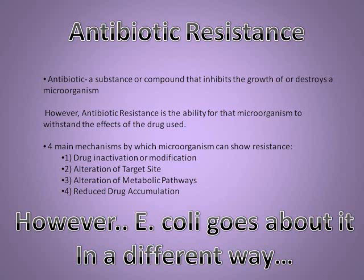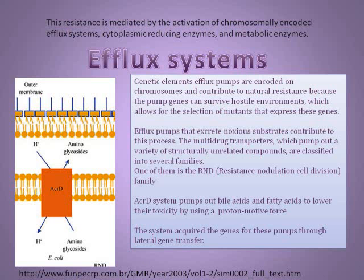The only concern about E. coli is their ability to resist antibiotics. Antibiotics are substances or compounds that inhibit the growth of or destroy a microorganism. E. coli has found a way to intrinsically build resistance towards many regular drugs. Four typical main mechanisms by which microorganisms show resistance are drug inactivation or modification, alteration of target site, alteration of metabolic pathways, and reduced drug accumulation. E. coli, however, goes about it differently because it has the ability to occupy multiple niches, including human and animal hosts. It can also exchange genetic material with other pathogens, including pathogenic E. coli. E. coli's resistance is mediated by the activation of chromosomally encoded efflux systems, cytoplasmic-reducing enzymes, and metabolic enzymes.